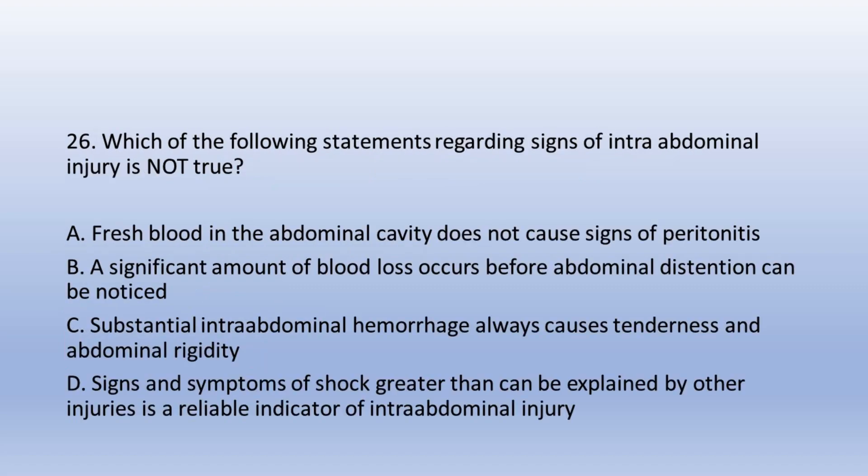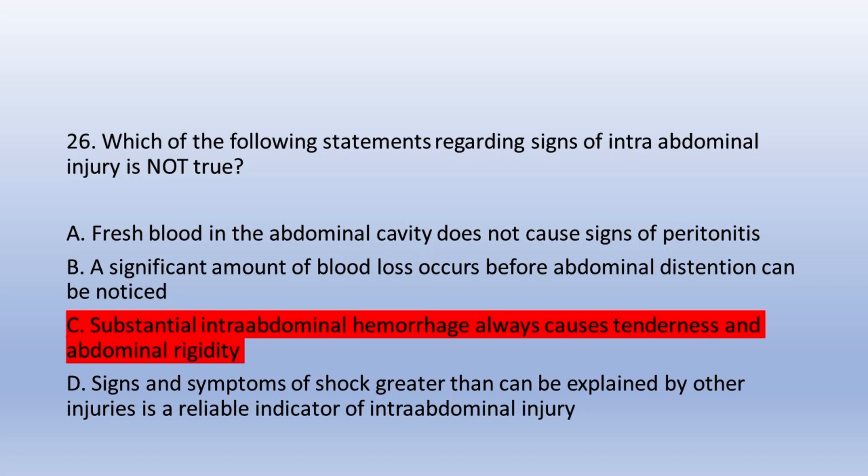Question 26. Which of the following statements regarding signs of intra-abdominal injury is not true? A. Fresh blood in the abdominal cavity does not cause signs of peritonitis, B. A significant amount of blood loss occurs before abdominal distention can be noticed, C. Substantial intra-abdominal hemorrhage always causes tenderness and abdominal rigidity, D. Signs and symptoms of shock greater than can be explained by other injuries is a reliable indicator of intra-abdominal injury. The answer is C. Substantial intra-abdominal hemorrhage always causes tenderness and abdominal rigidity.